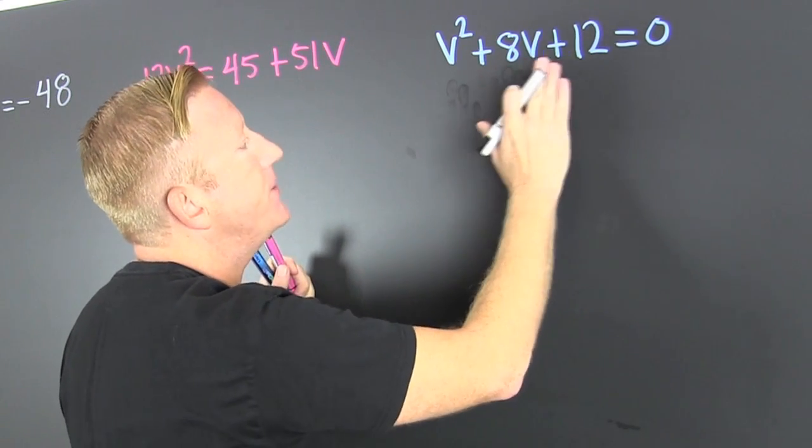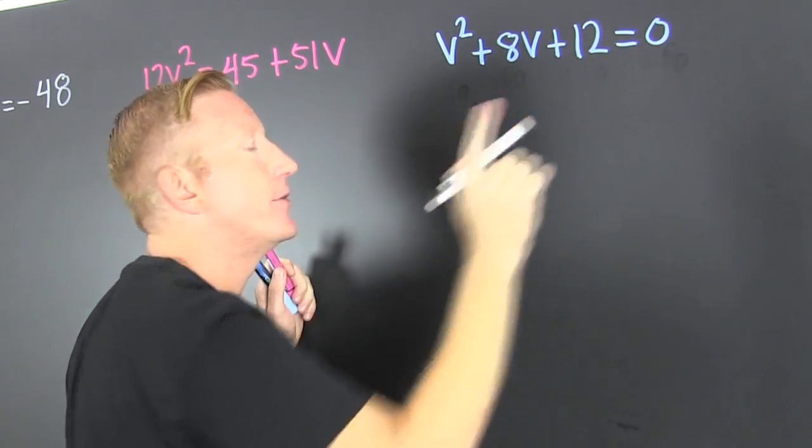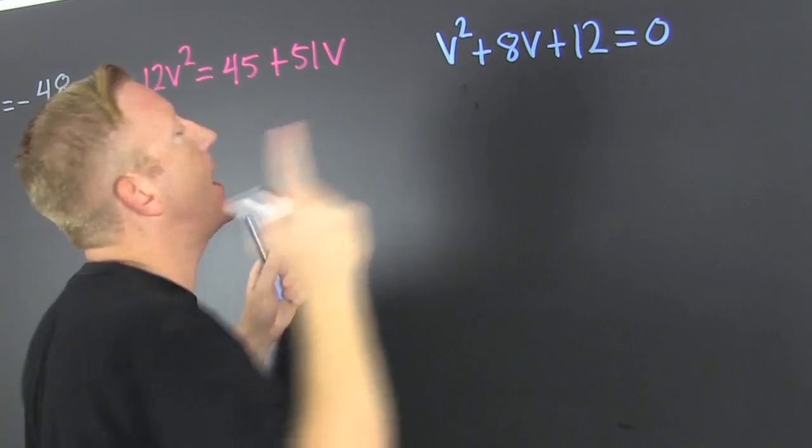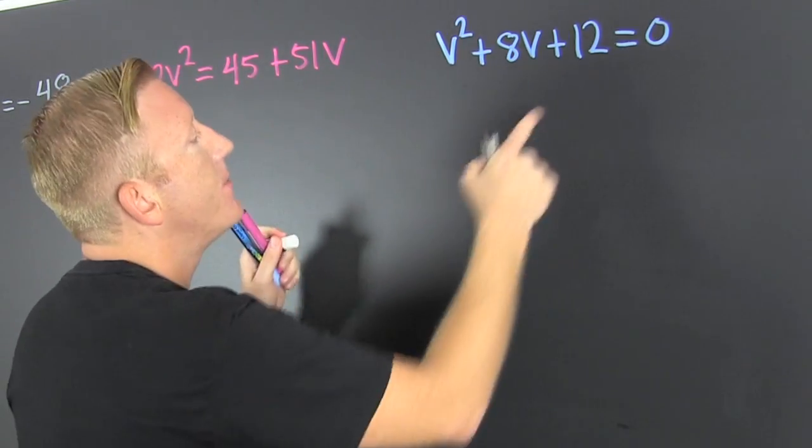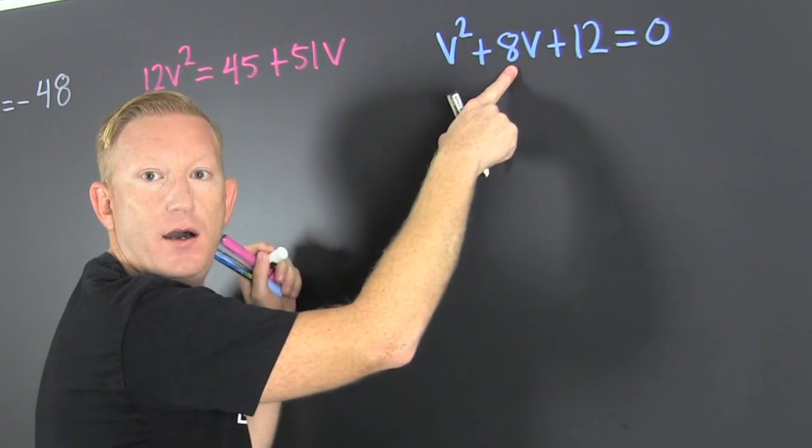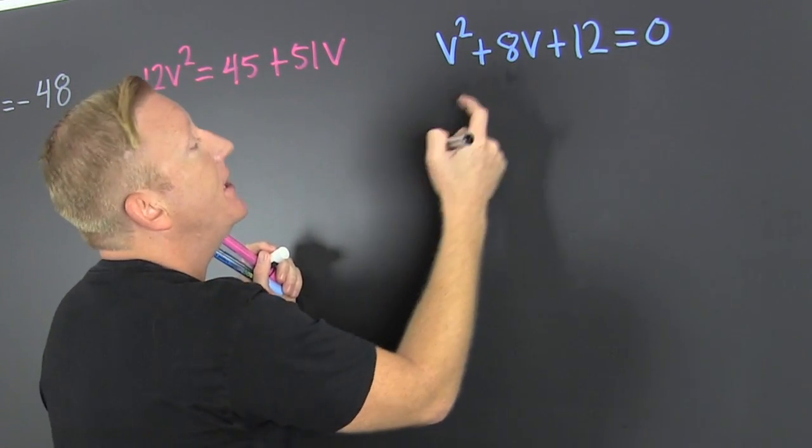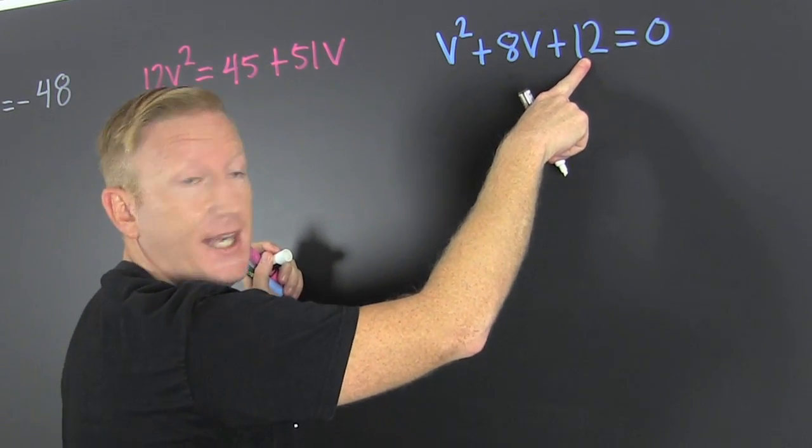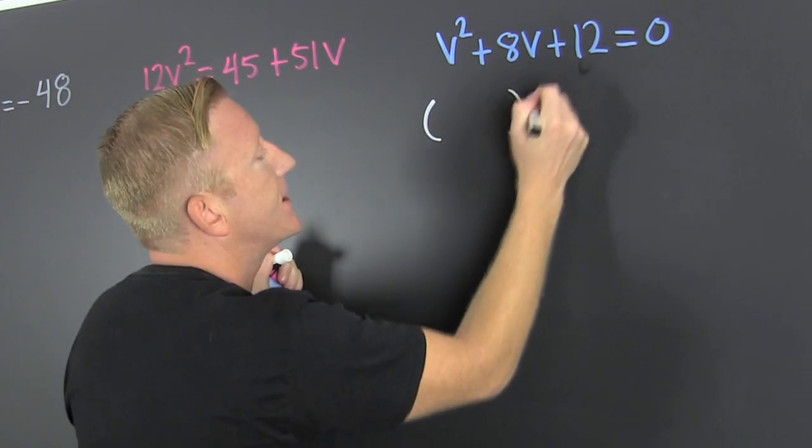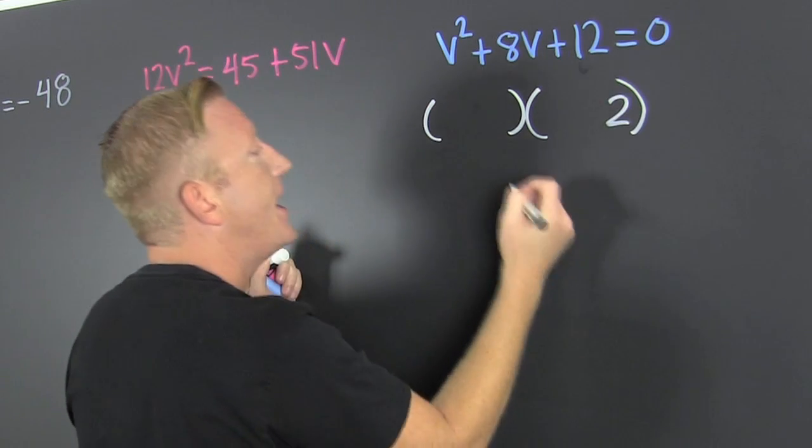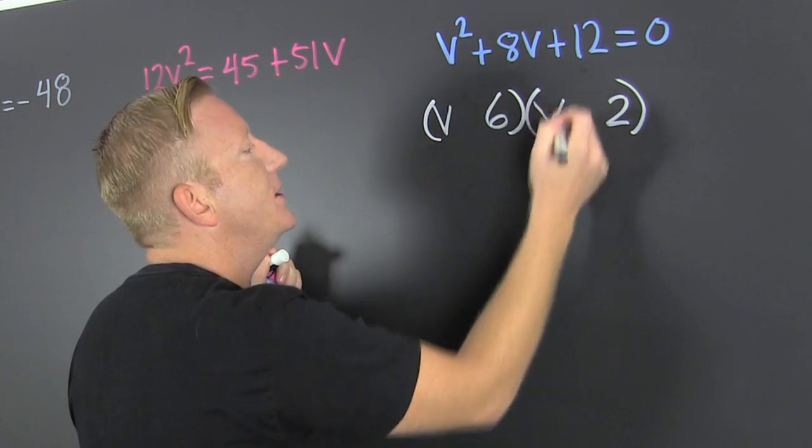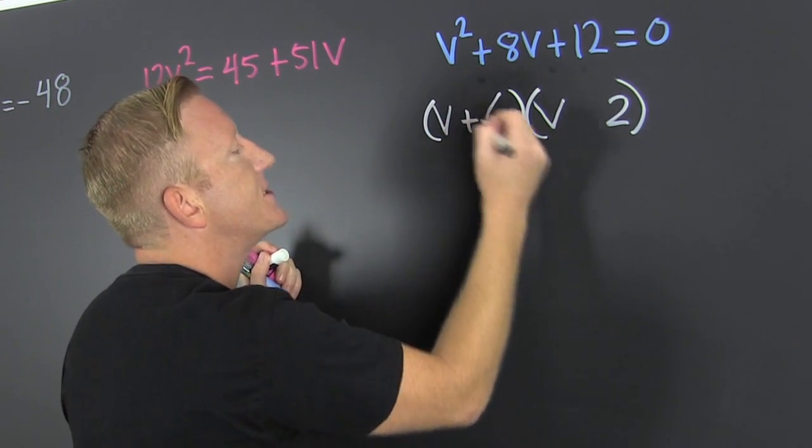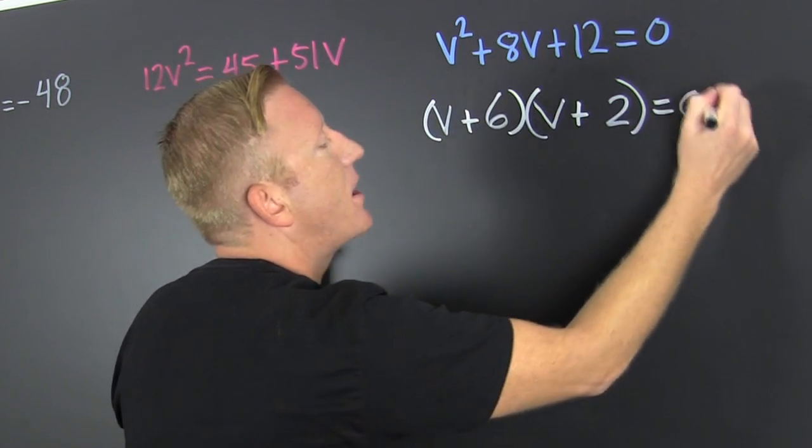Right on up over here I have v squared plus 8v plus 12 is equal to zero. So first I set it equal to zero, done for us. Now I factor. So I'm looking for the factors of 12 that add to be 8. Are there any? Yeah, you got a 2 and 6, so you gotta get that 2 and 6, v and v.